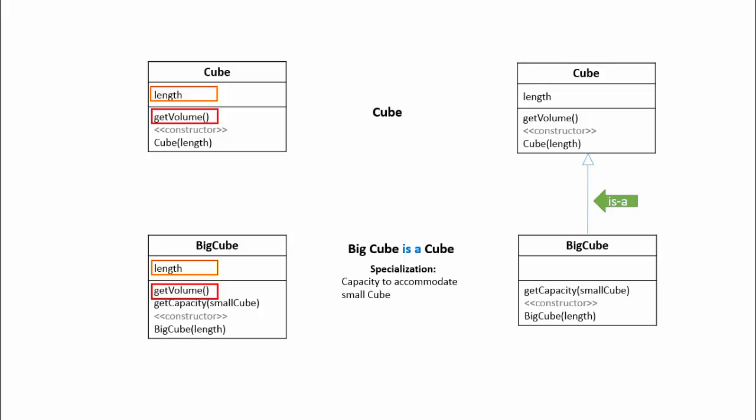Now the big cube is a special type of cube which means the is-a relationship exists between these classes. In object oriented paradigm, such specialized class is called child class or subclass. And the generalized entity that is the entity from which the child class is derived is called parent class or superclass.